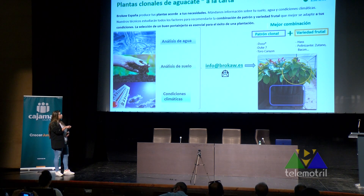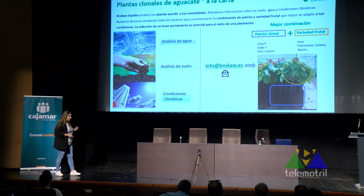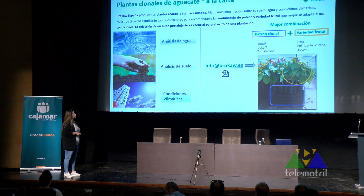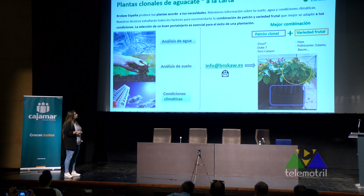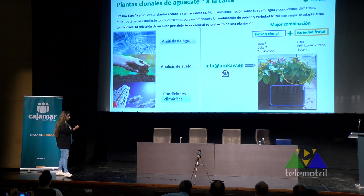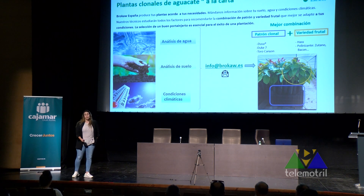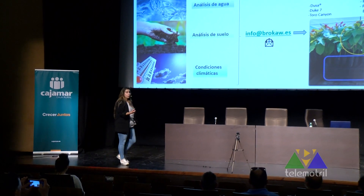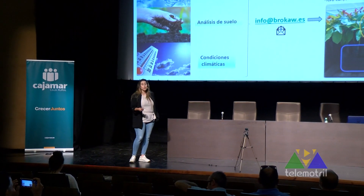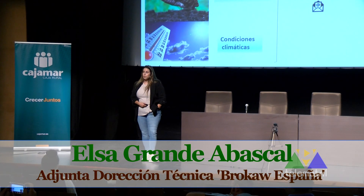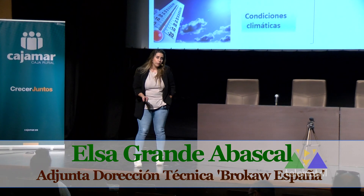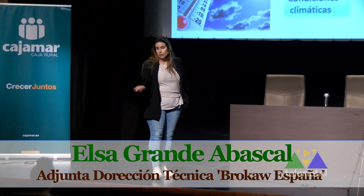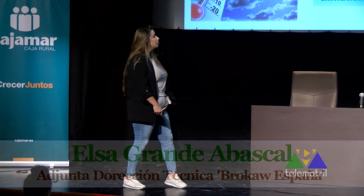El patrón clonal puede ser Dusa, Duque 7 o Toro, y próximamente tendremos algún patrón más que se está registrando en Europa. También es muy importante estudiar las condiciones climáticas, porque cada vez se está extendiendo más el cultivo, lo están poniendo en zonas de Cádiz o Sevilla donde puede haber heladas, y hay que estudiar si es necesario un sistema antihelada o un sistema de nebulización para evitar que las altas temperaturas en verano dañen el cultivo.